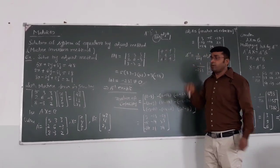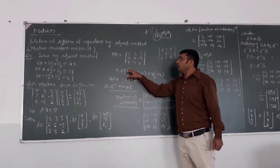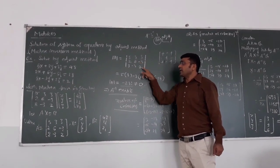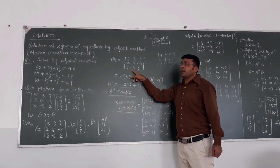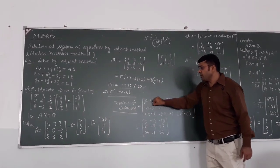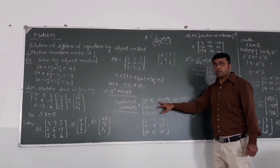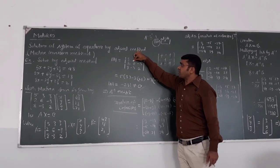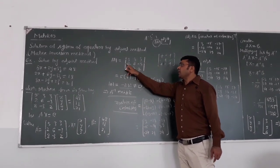For element 5 in the first position (positive sign), leave its column and row; the remaining elements give cross multiplication: 6×2 minus (−3)×(−3) = 12 − 9 = 3. That is the first cofactor. For the second element 3 (negative sign), leave its column and row; remaining elements are 2, −3, 8, 2 — cross multiply: 2×2 = 4, minus (−3)×8 = −24, giving 4 + 24 = 28, with a minus sign applied.